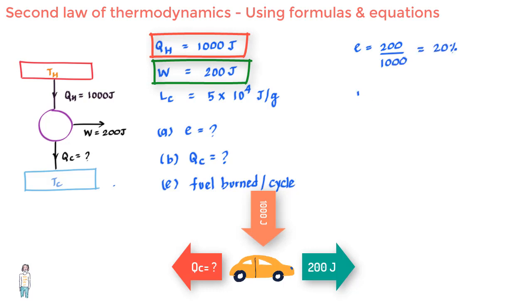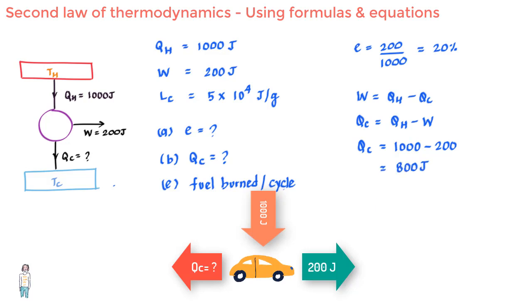Now in part B, since W equals QH minus QC, we say QC is equal to 1000 minus 200 joules, which is equal to 800 joules. This means that 800 joules of heat leaves as exhaust in every cycle, or the heat is discarded.